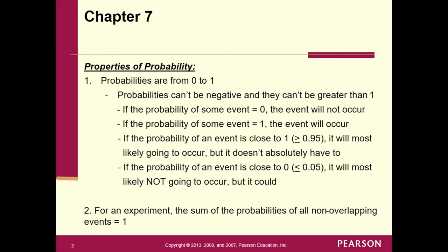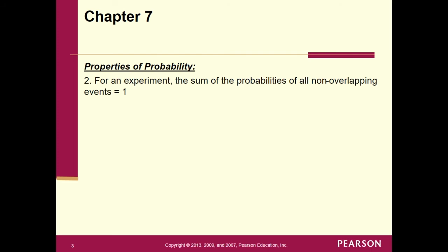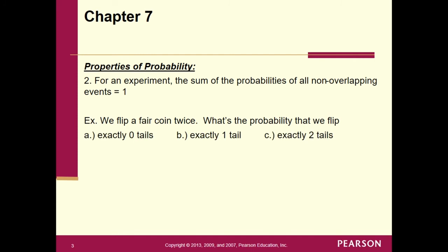Second property of probability: for an experiment, the sum of the probabilities of all non-overlapping events is equal to 1. Let's explore that. Say we flip a fair coin twice. What is the probability of getting exactly 0 tails, exactly 1 tail, exactly 2 tails? These are all the possible final outcomes. To get all outcomes, we can use a probability tree to help us figure out these probabilities.